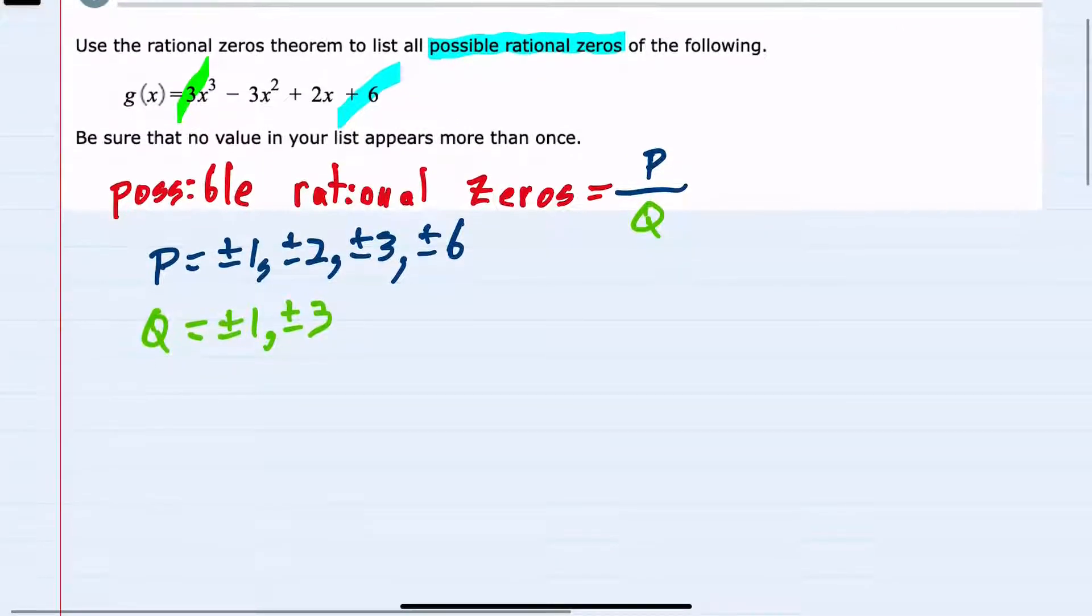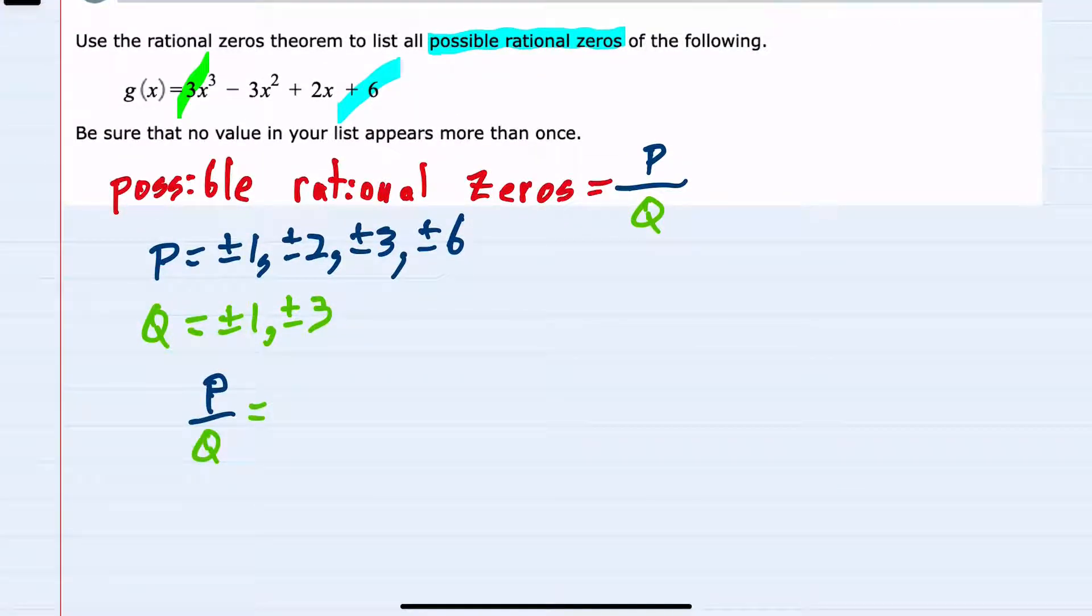So all of our fractions here for p over q, I'll start with my first p, plus or minus one, over my first q, also plus or minus one, gives me my first potential zero: plus or minus 1.